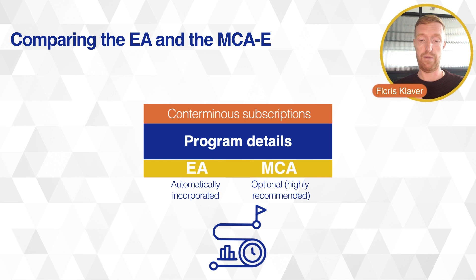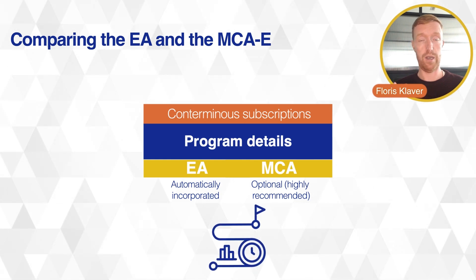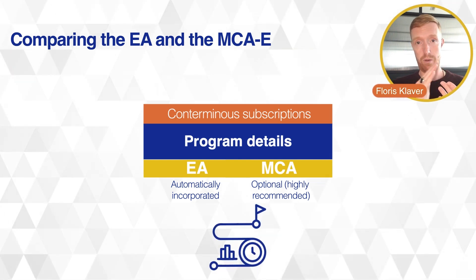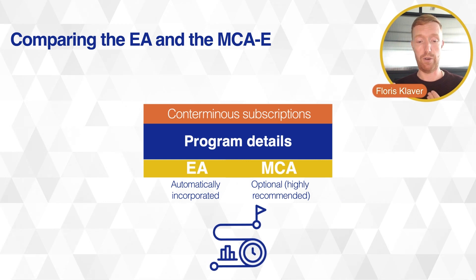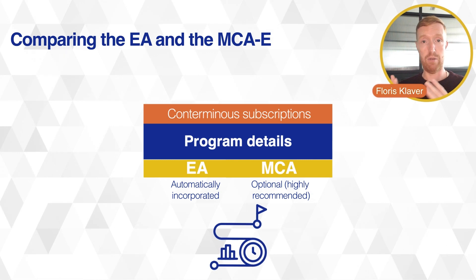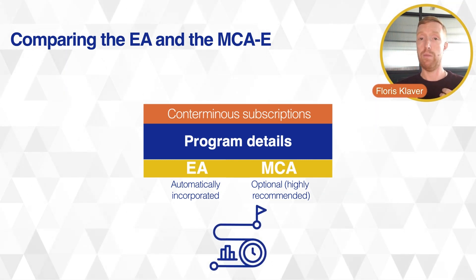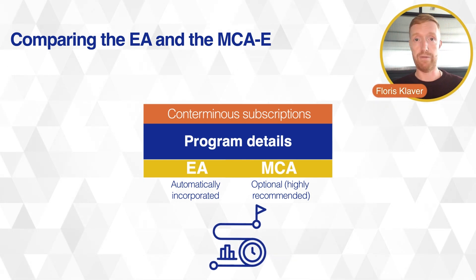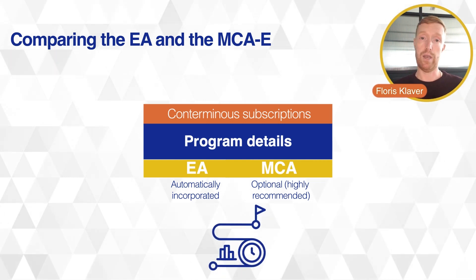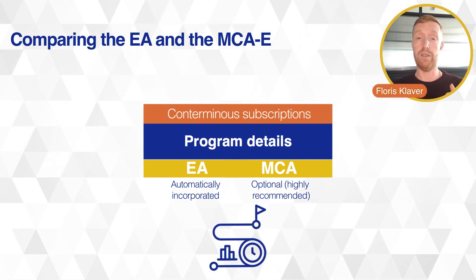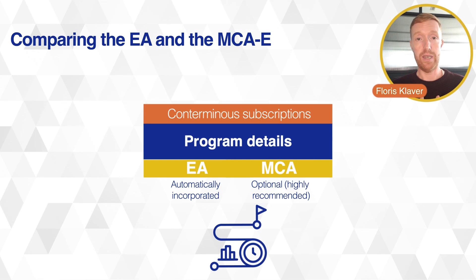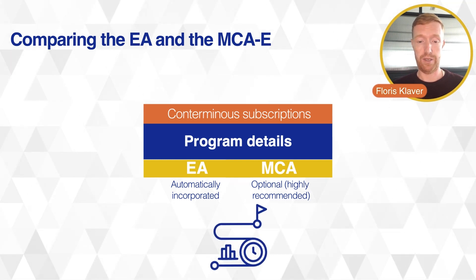Co-term subscriptions are automatically incorporated in the Enterprise Agreement — any additional cloud subscription licenses are always aligned to the next anniversary date of your contract. In the MCAE this is optional, but highly recommended. You can buy new M365 E3 subscriptions and have them run for a year from the date of ordering, or you can align the end date of additional licenses to an existing period, which makes IT asset management easier.